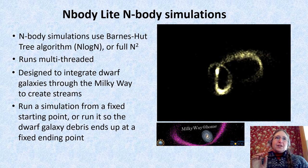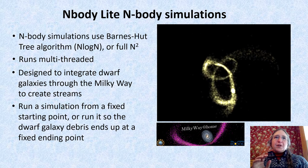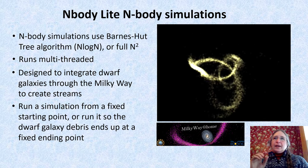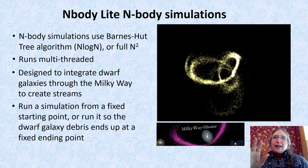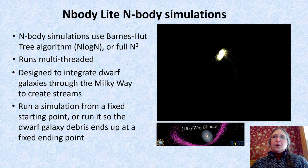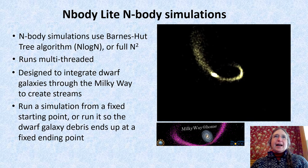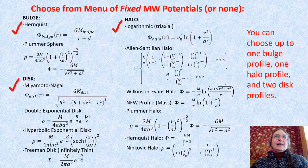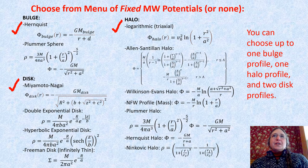You can run a simulation starting from a fixed starting point, or run it so that your dwarf galaxy ends up where you want it to in the sky. First, you choose from a menu of fixed Milky Way potentials or no potentials.